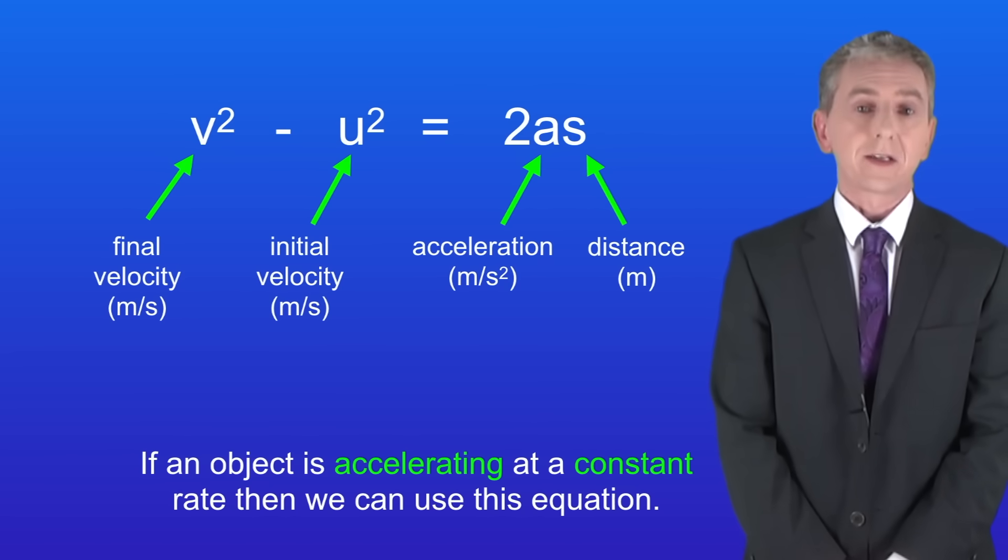Now if an object is accelerating at a constant rate then we can use a different equation and I'm showing you that here. The final velocity squared minus the initial velocity squared equals 2 multiplied by the acceleration multiplied by the distance. Now I want to make a couple of points about this. Firstly you are given this equation in the exam so you don't need to learn it.